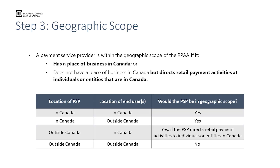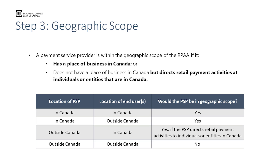The third part of the test is to ask whether the PSP is within the geographic scope of the law, and there are two ways that this could occur. You are within the geographic scope if you are a PSP with a place of business in Canada. Or you could be a PSP that does not have a place of business in Canada, but end users in Canada are using your payment services and you are directing those services to individuals or entities in Canada. We have a chart on the slide that can help you assess whether you are within geographic scope, depending on your location as well as the location of your end users.